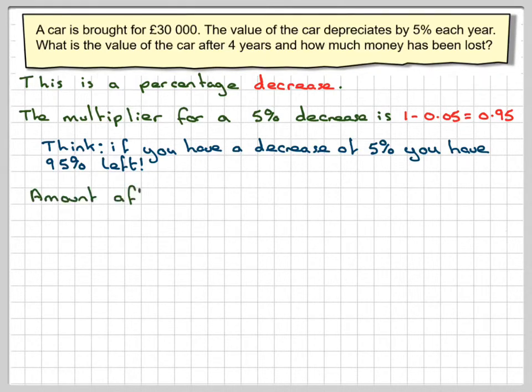OK, so to find the amount after four years, that will be £30,000 times 0.95. That's just one year, so we have to do that three more times, so in fact four times.